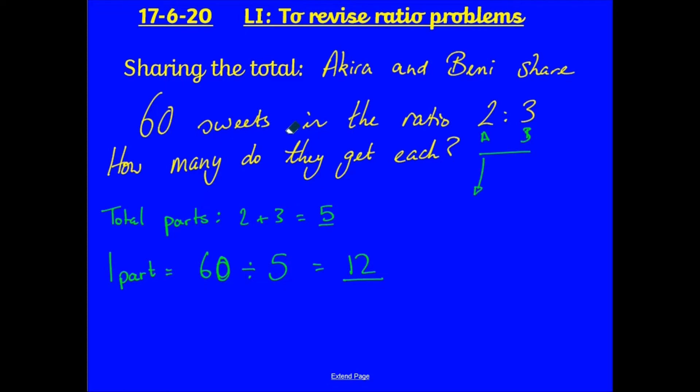Now, Akira, he gets 2 parts. And Benny, he gets 3 parts. So, therefore, Akira gets 2 parts. And each part is worth 12. So, Akira gets 24. Benny, well, he gets 3 parts. Again, each part is worth 12. So, that is equal to 36. So, therefore, I now know that Akira would get 24 sweets. Benny would get 36 sweets. And I can check my maths by adding these together to make sure that they equal 60, which they do indeed. Big tick.